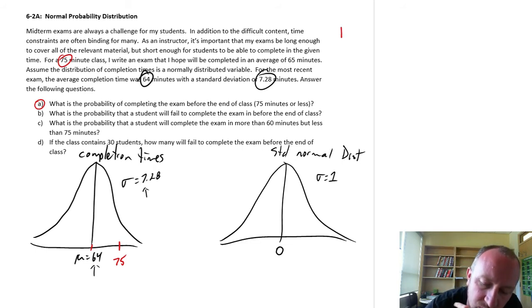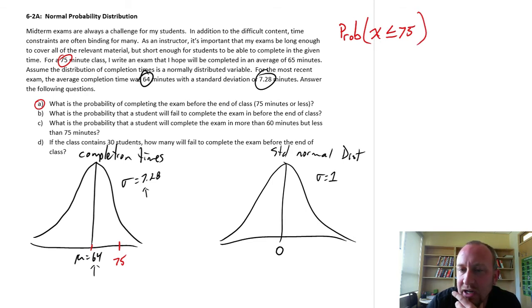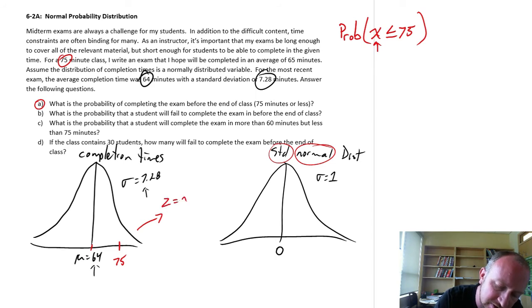So what I want to know is the probability of completing the exam before the end of class. So the probability of obtaining values from that distribution less than or equal to 75. That's 75 minutes, that's our end of class. And X is the completion time, a student completing the exam before 75 minutes is up. So what can I do? Well, not a lot. What I first need to do is what we say, standardize or normalize that value. And so here's where that's coming from, standardize or normalize.